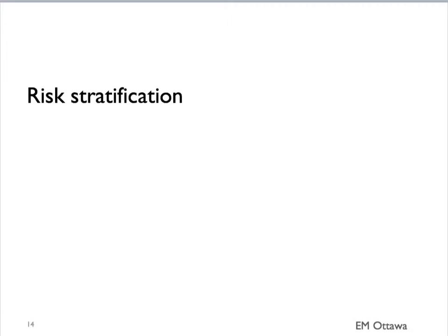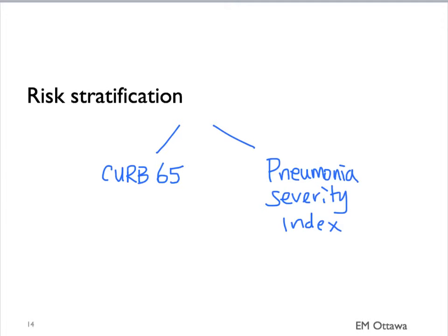There are two very helpful tools that help us decide. The first one is called CURB-65, and the other one is called the Pneumonia Severity Index. On the blog, under other resources, you will see both of these discussed in detail. We will first talk about CURB-65.